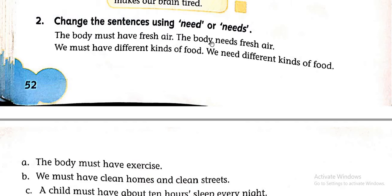Wherever the subject is singular — that is, one subject, one object, or any one thing — there we use 'needs', which is the singular form of the verb. But where the subject is plural — more than one — like they, we, boys, girls, children — in that case we use the verb 'need', which is the plural form. So: singular subject → needs; plural subject → need.